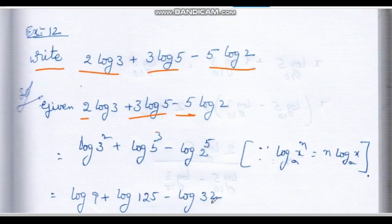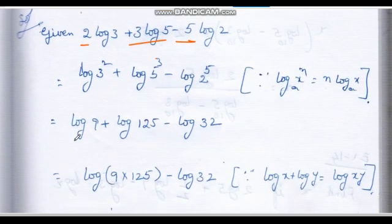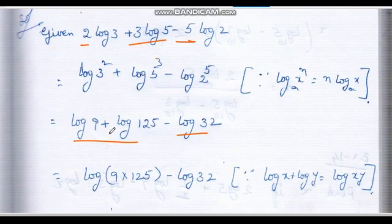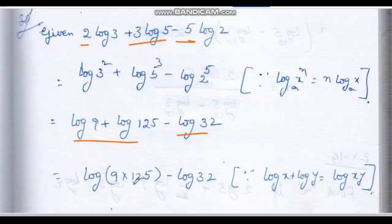2 to the 4 is 16, 16 to the 2 is 32. That gives us: log 9 plus log 125 minus log 32.